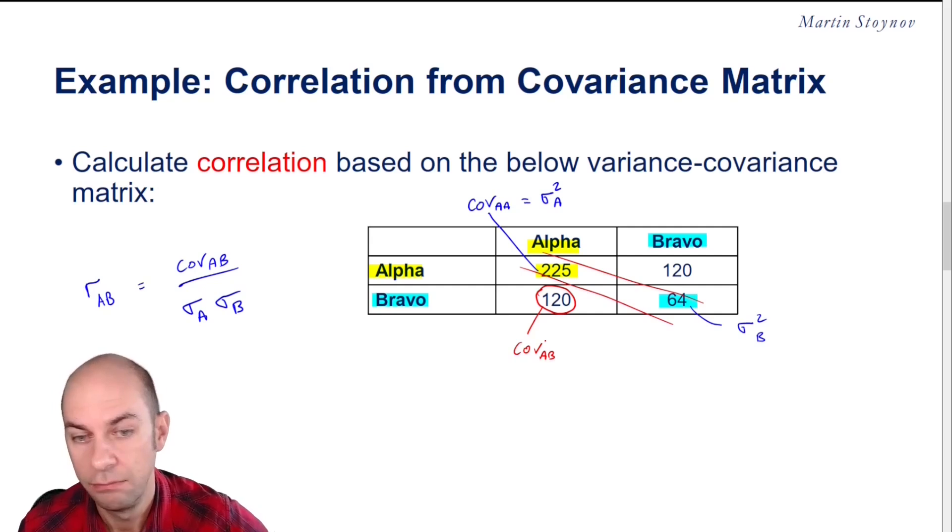You can multiply the deviations in any order, but you'll get the same result. So what you're going to say is that this value here is also the covariance A, B. And you can see here that they are the same.